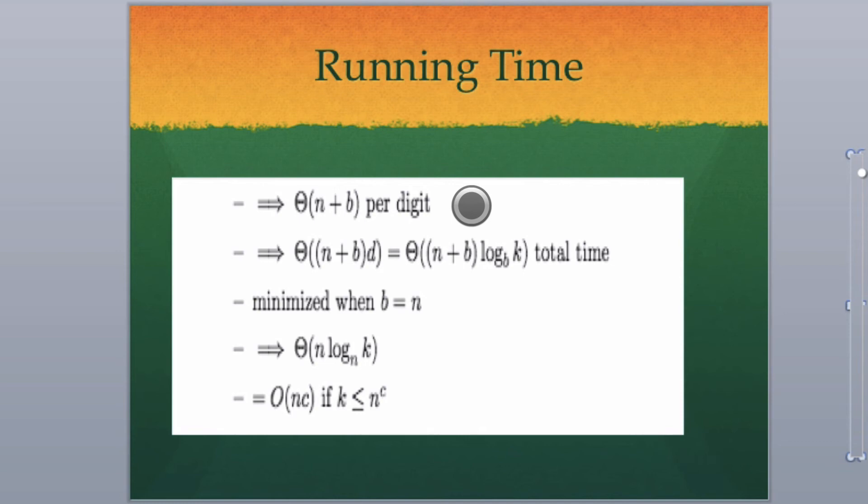Radix sort can be a linear time algorithm. Essentially, if you make the log N of K right here a constant. If you make it a constant, then because the numbers are small and close together, you can say if K is less than N to the C. So that means the numbers aren't a huge varying power from N to the C. C could be an arbitrary number, but it's going to be a constant.